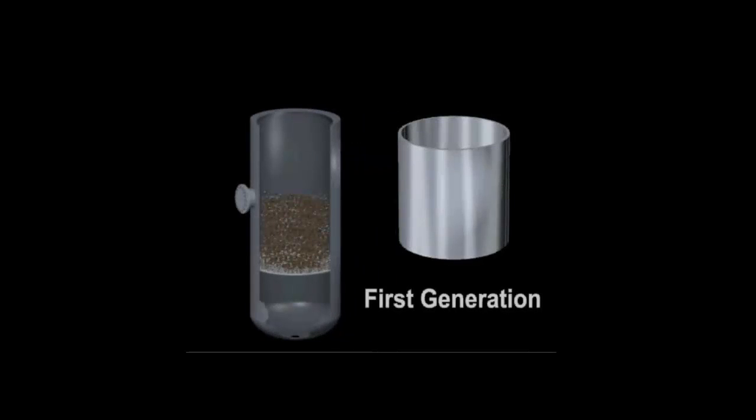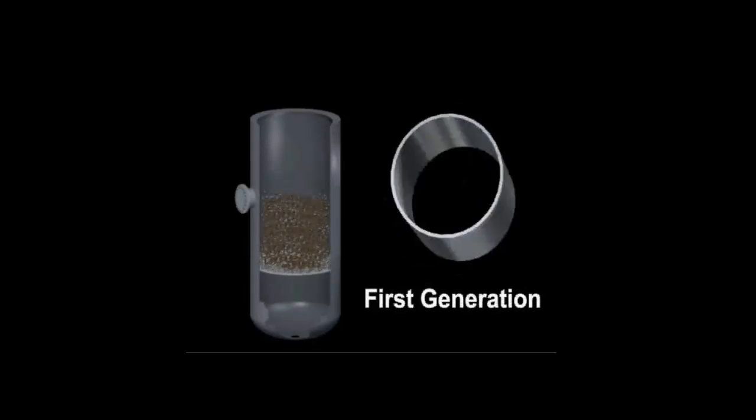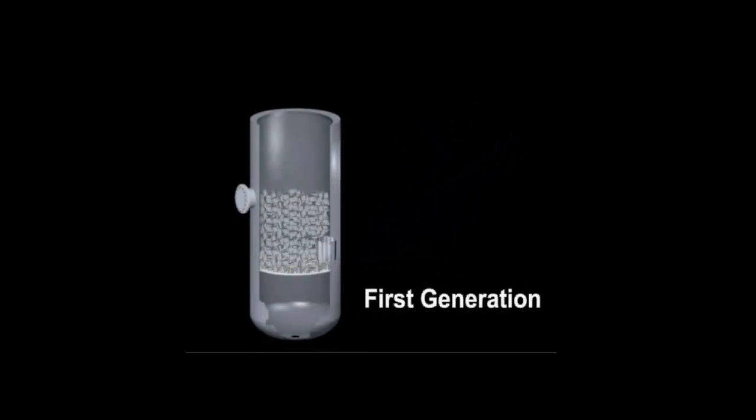First generation packing was more uniform and consisted of cylinders such as the rashig ring.